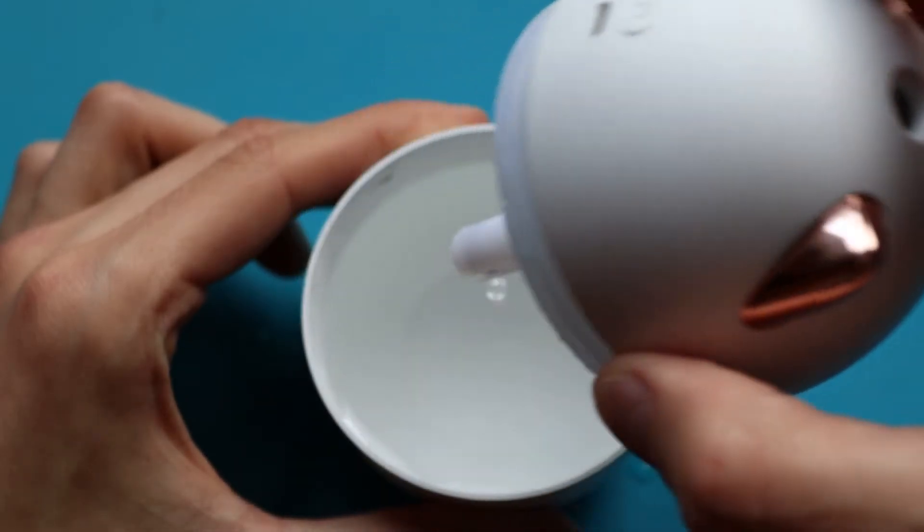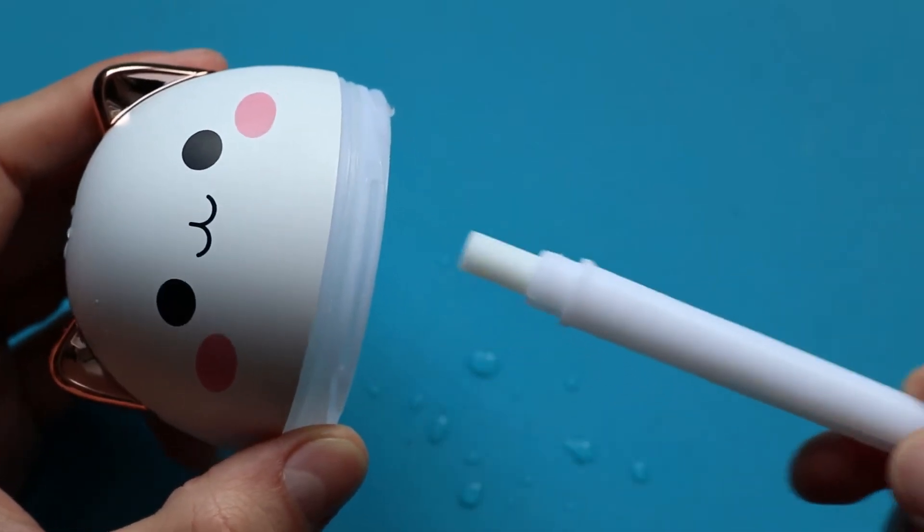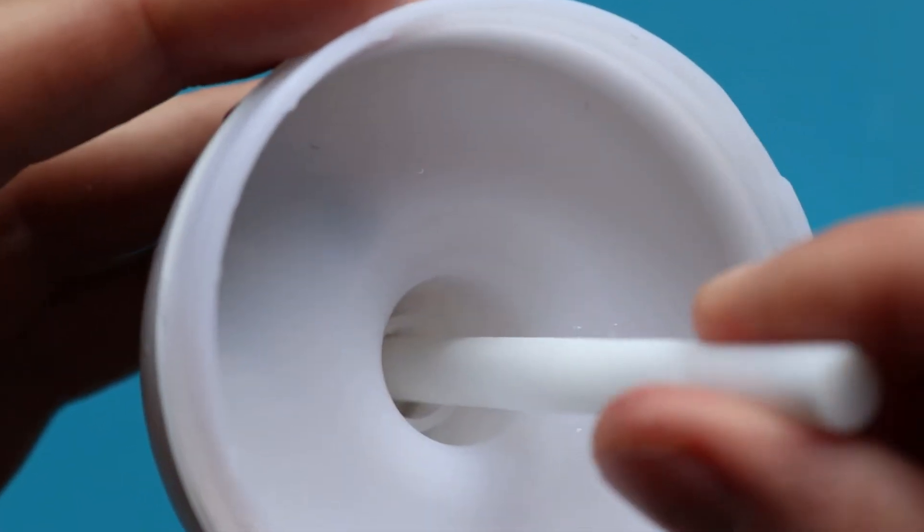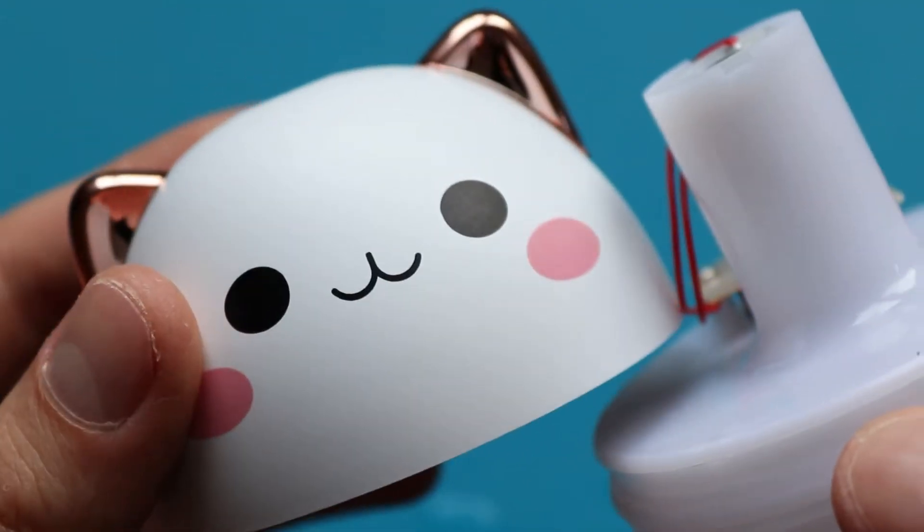So let's disassemble it to look at what is inside. There are several main parts. Water tank, wick, electronics that control the humidifier, and the most important part of it, which creates all the magic, is the piezo element.